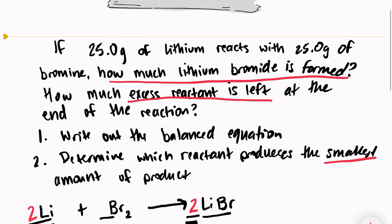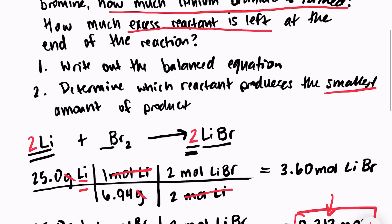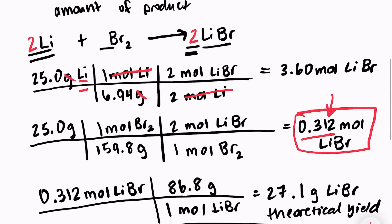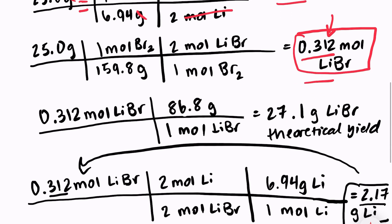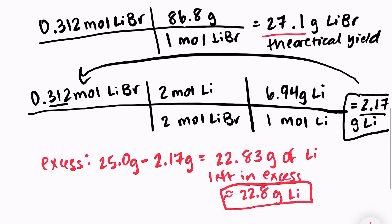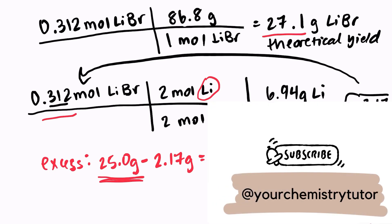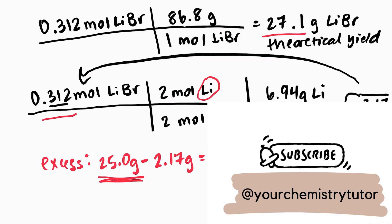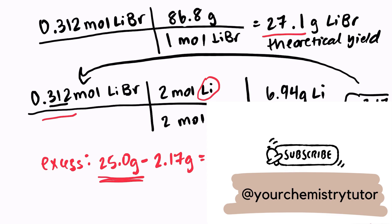To recap: we solved this problem by first writing out the balanced equation, then determining the limiting reactant based on which reactant produced the smaller amount of product, converting that to grams of product formed, using the product to find how much excess reactant was consumed, and subtracting from the original amount to find what's left over. I hope this was helpful — leave a comment if you have questions, and check out other videos on my channel. Thank you for stopping by!